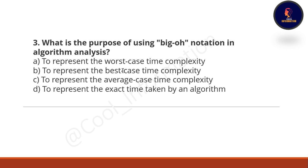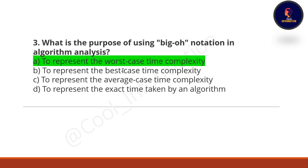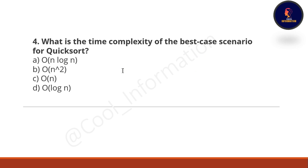Next question: what is the purpose of using Big O notation in algorithm analysis? Option A is to represent the worst case time complexity, option B the best case, option C the average case. The correct option is option A — Big O notation is used for representing the worst case time complexity of an algorithm.